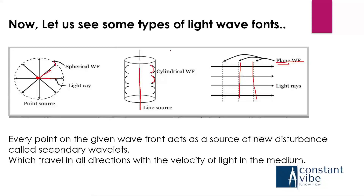Every point on a given wavefront acts as a source of new disturbance, called secondary wavelets, which travel in all directions with the velocity of light in the medium. Looking at the picture, you can see the different types: spherical wavefront, cylindrical wavefront, and plane wavefront.